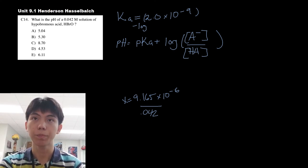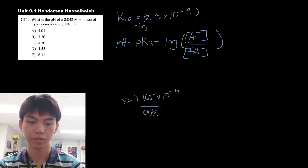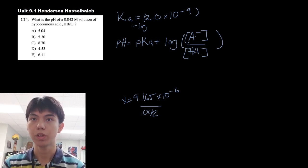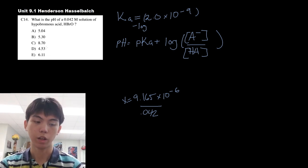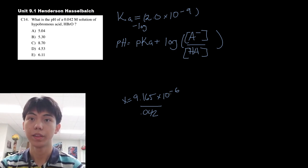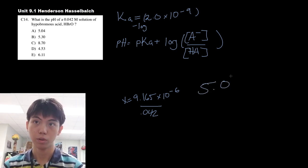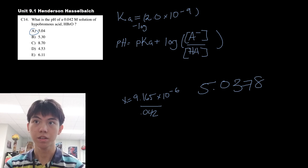Let's take that all up. Let's do the negative log. Negative log of 2.0 times 10 to negative 9, which is 8.7. So don't be quick on circling 8.7 here. Instead, we need to add it to the log of 9.165 times 10 to the negative 6, and you divide that by 0.042. And we're given an answer of 5.0378, which is closest to A. And that's your answer.